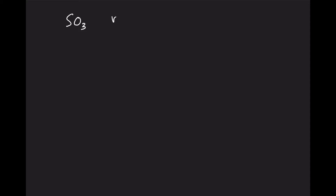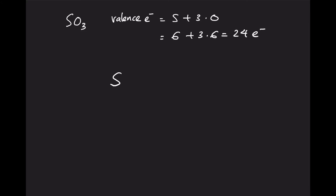Let's discuss the Lewis structure of SO₃. For SO₃, we count the valence electrons: S has 6 electrons and O has 6 electrons, so that is 6 plus 3 times 6, giving 24 electrons to distribute. We recognize the center atom, which is S in this case because we only have one S, and it is surrounded by three oxygen atoms.